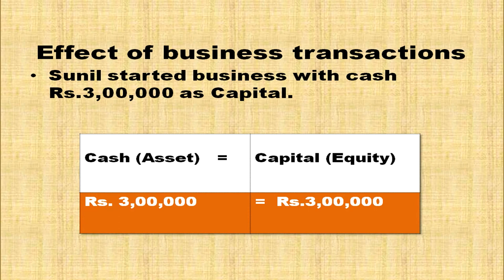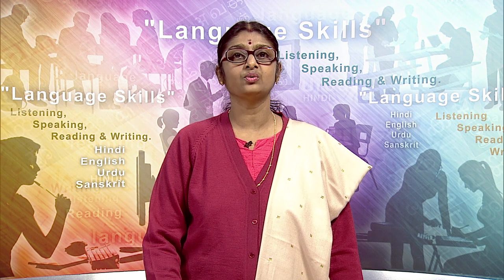Here is a transaction: Sunil started business with cash rupees 3 lakh. This is the capital. Cash of rupees 3 lakh is coming inside the business in the form of capital. So accounting equation is satisfied: Assets = Liability + Capital. On both sides we have 3 lakh.